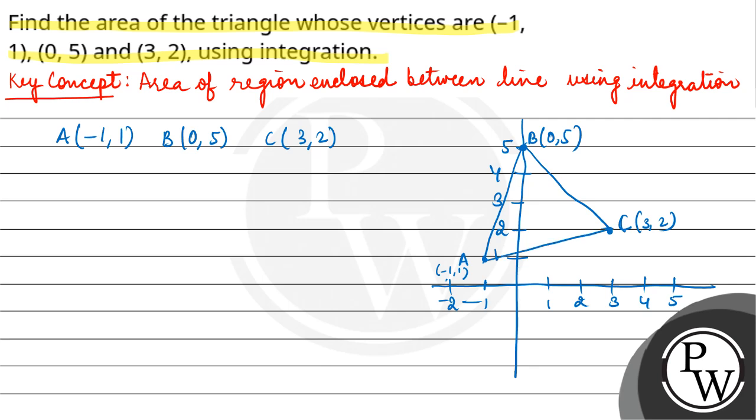So this is the shaded region. This area you have to find. So we will start with line AB, which is Y minus 2 upon 5 minus 2 equals to...